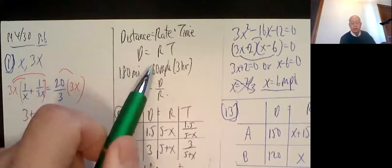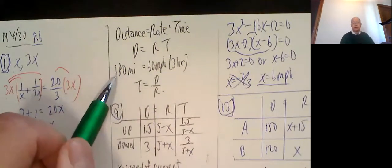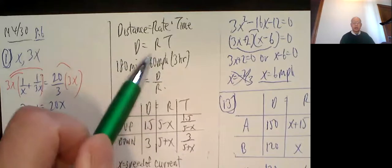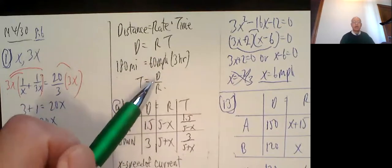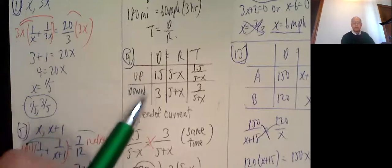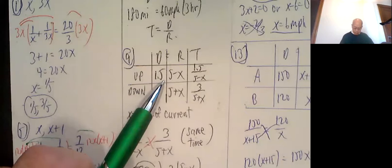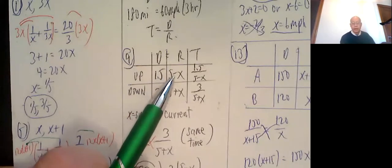Distance is equal to rate times time. A simple example is that if you drive 60 miles an hour for 3 hours, 60 times 3 is 180. You've gone 180 miles. If I divide both sides by R, that means time is distance divided by rate. So I've got that. Now it says the boat can go 5 miles an hour. The current, we don't know, call it x.